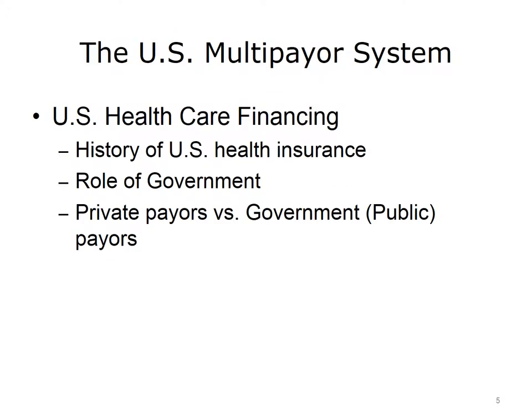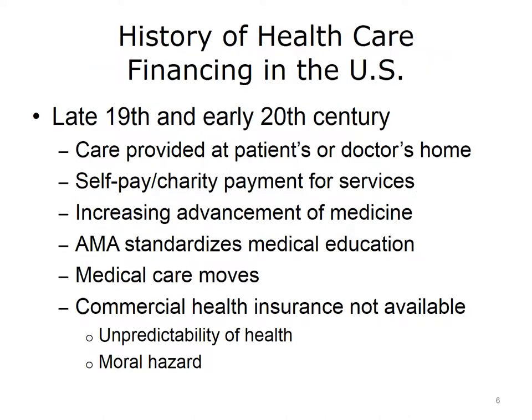This lecture provides a brief history of the health insurance industry in the U.S. and discusses the role played by the government and other factors that shaped the current system. It will also make the distinction between privately funded and publicly funded or government health insurance. The history of the health insurance industry in the United States is relatively recent. In the late 19th and early 20th centuries, medical care was provided primarily at the patient's or the doctor's home, and the cost of care was borne by the patient or charities.